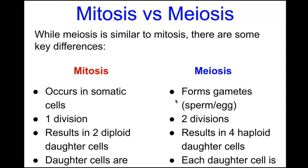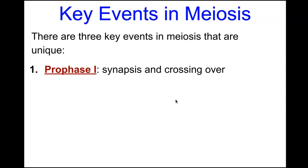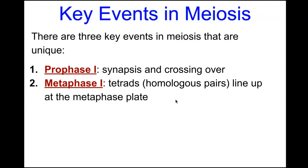The genetic uniqueness results from key events in meiosis. The first is prophase I, where homologous chromosome pairs pair up along their synapsis, allowing crossing over to take place. Crossing over enables genetic recombination — a mix and match of DNA on homologous chromosome pairs between the chromatids closest to one another.